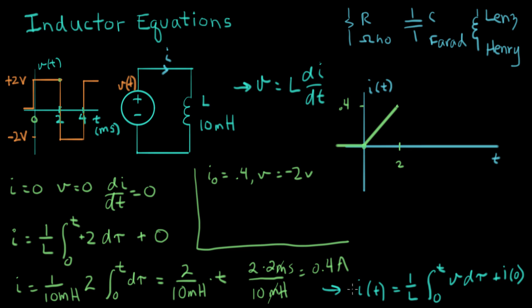So let's use our inductor equation one more time with these initial conditions. That tells us I equals one over L integral from, what's the new point? Two milliseconds to T. And V of T after two milliseconds is minus two volts. Minus two dτ plus, now we have a starting current. Our starting current was 0.4 amps. Zero point four amps.